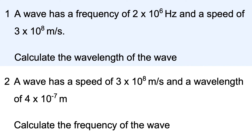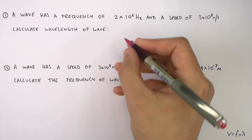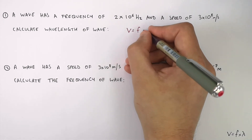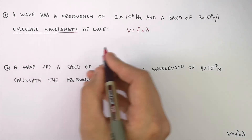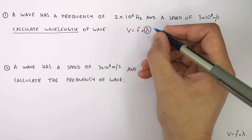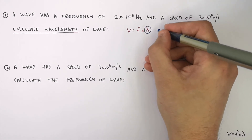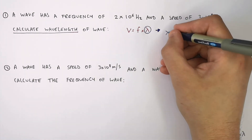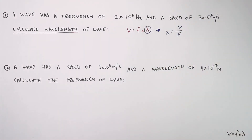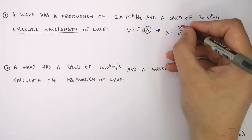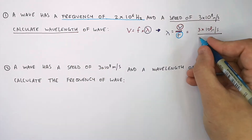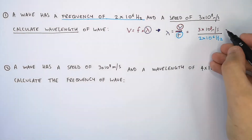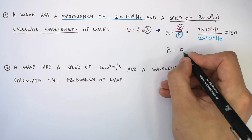This is the next problem you will learn how to solve. We're trying to calculate the wavelength, and we've got the frequency and the speed. We need the equation V equals F times lambda. Underline what you're trying to calculate — in this case, wavelength — then circle lambda in the equation. Rearrange so lambda equals V divided by F. Substituting in: V is 3×10⁸ meters per second, and F is 2×10⁶ hertz. Dividing V by F gives a wavelength of 150 meters.